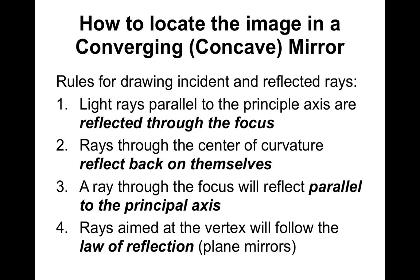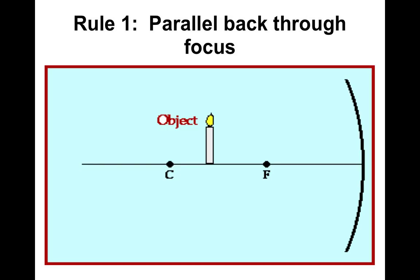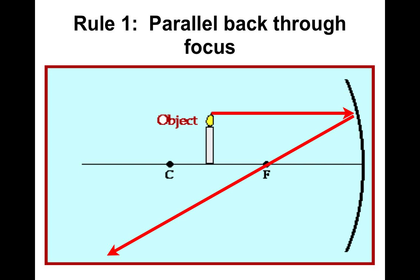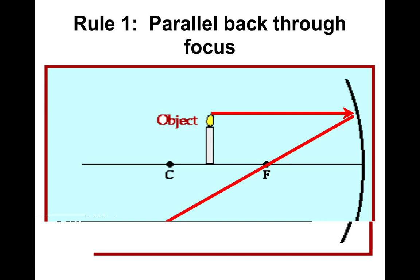Our last rule is that if the ray is aimed at the vertex — which is that special spot where the principal axis meets the mirror — all light rays are going to follow the laws of reflection. So the angle of incidence is equal to the angle of reflection. Whatever angle is coming in, it's going to come out the exact same. Here's the first rule demonstrated: if we send a light ray parallel to the principal axis, completely parallel to that special line through the middle, it will reflect back through the focus. Notice the arrow going in towards the mirror and the arrow going away — that's where it reflected through.